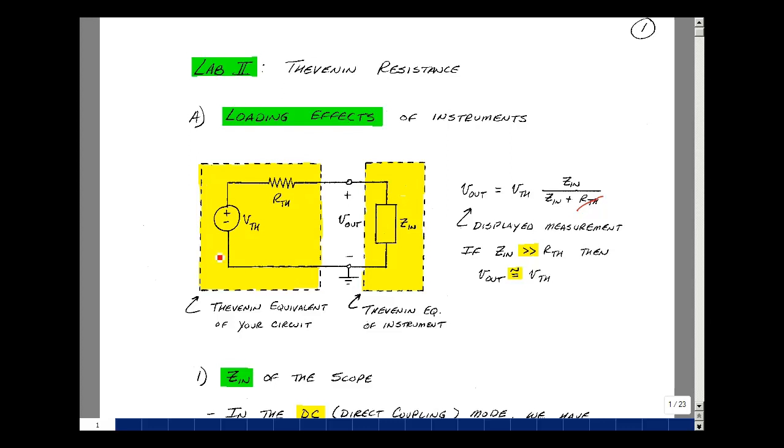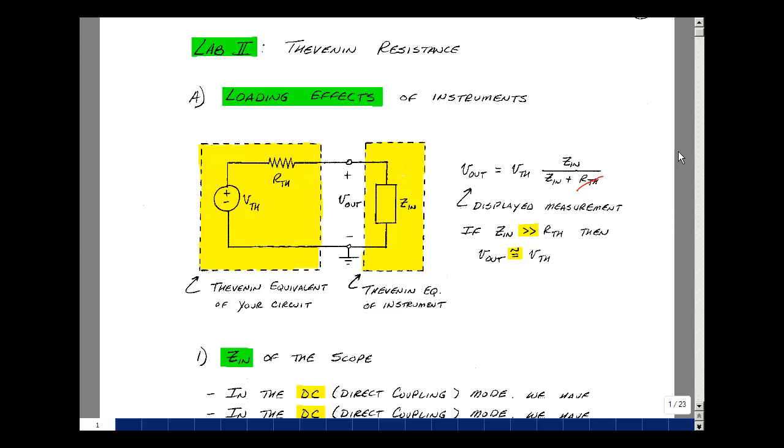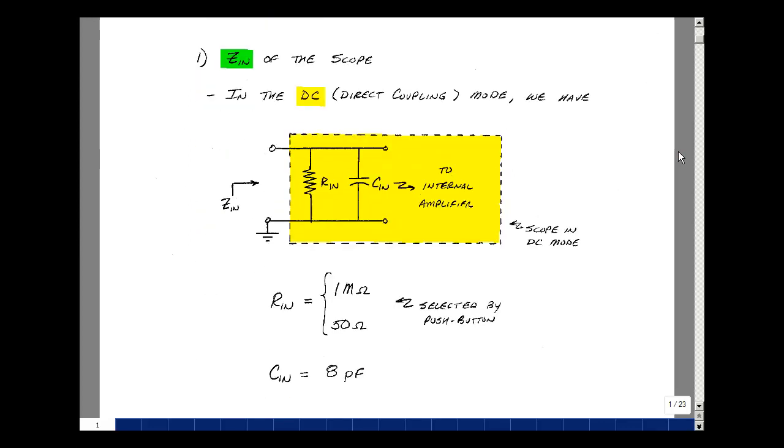Now, what kinds of Z-ins do we have? Let's take a look at the oscilloscope first. There are two modes we're going to be operating in the oscilloscope: one is called DC mode and an AC mode. The DC stands for direct coupling, which is just that. We're going to directly connect our circuit to the oscilloscope. So the Thevenin equivalent circuit looking in here is an R-in in parallel with a C-in, where R-in can be either 1 megaohm or 50 ohms by just pushing a button on the face of the infinium. In both cases, the input capacitance is about 8 picofarads. For DC, this looks like an open circuit, so the input impedance of our scope is 1 megaohm or 50 ohms.